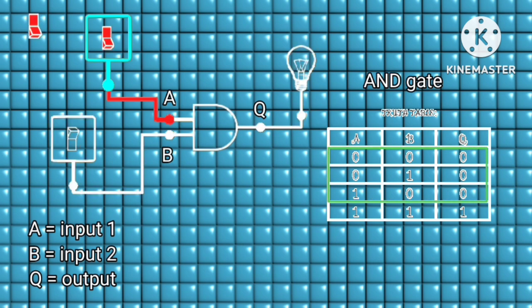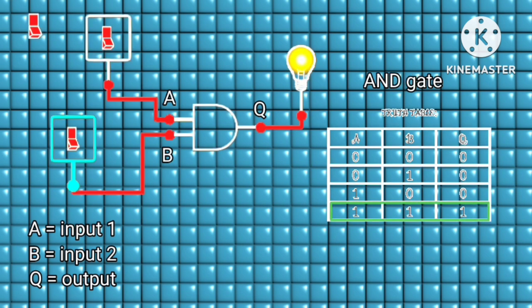You can see when both input switches are off or low, the output still stays low. And if either A or B switch is turned on, leaving only one switch low, the output still stays low. Until A and B input switches are both turned on, then we can have a high output. And that's why it's called an AND gate.